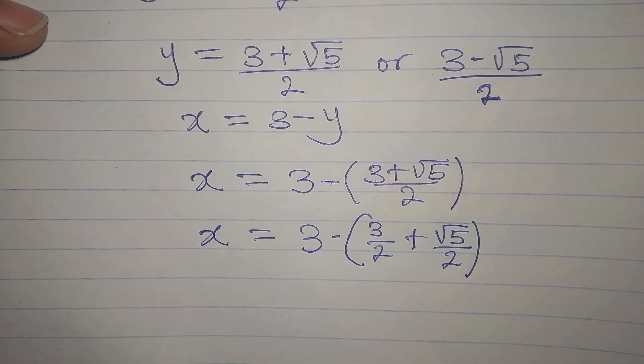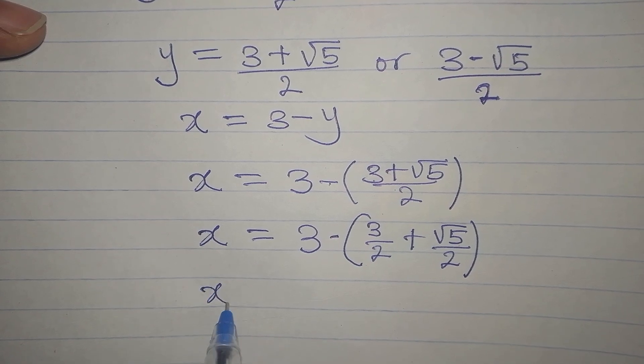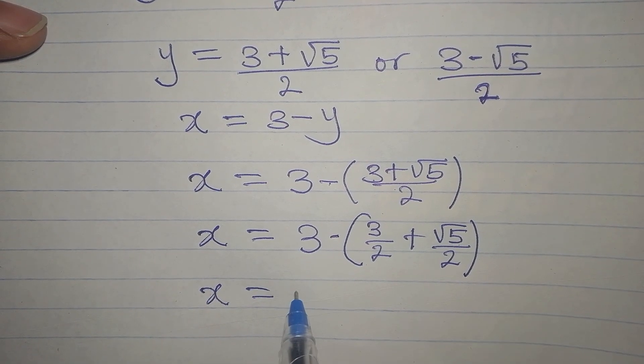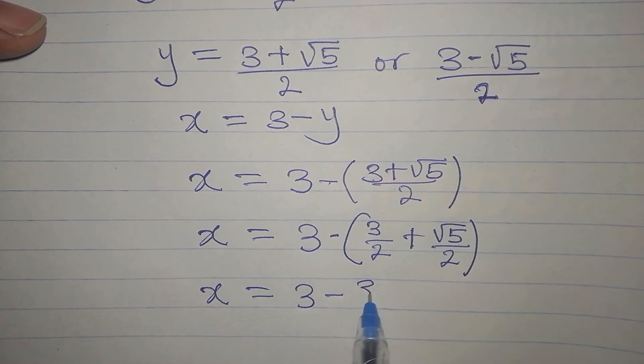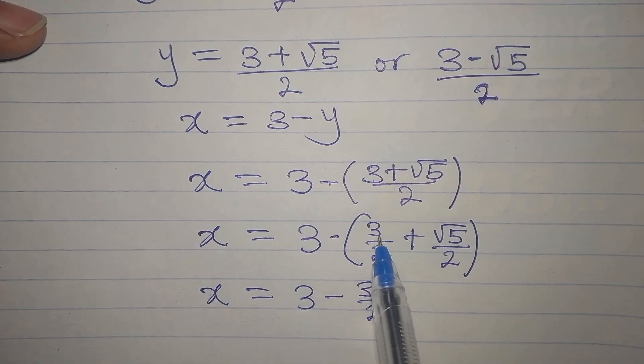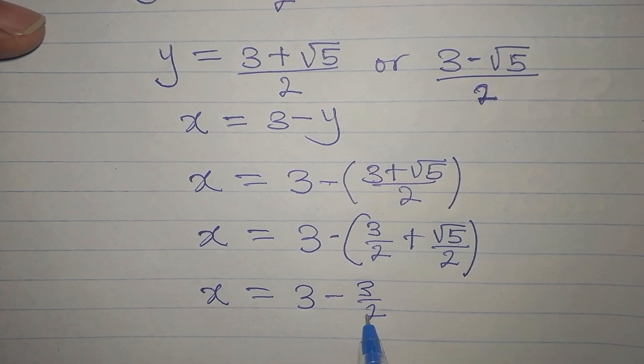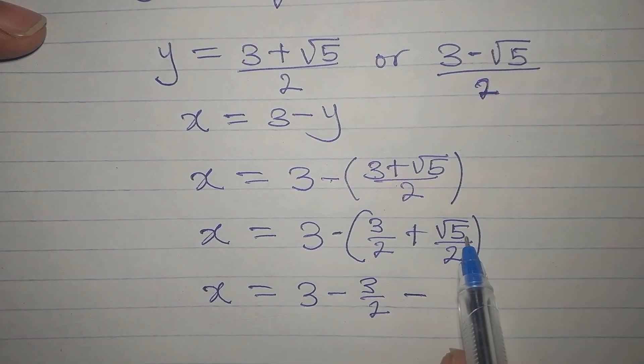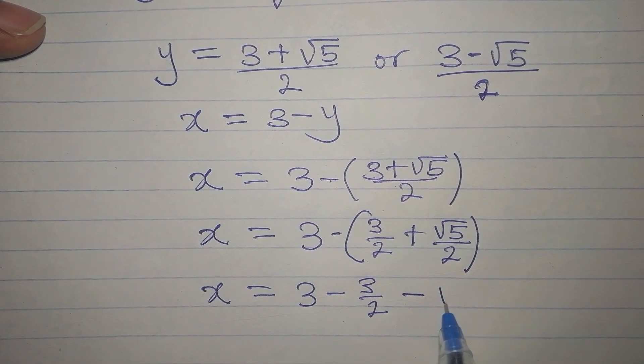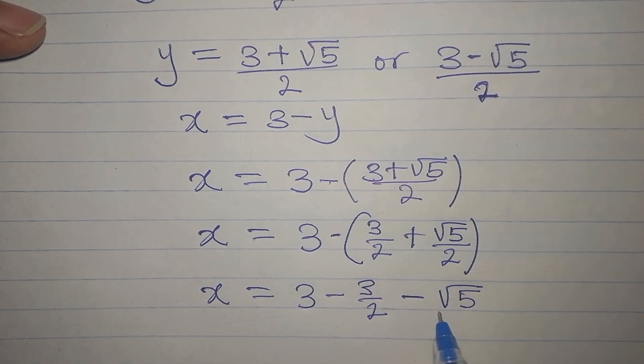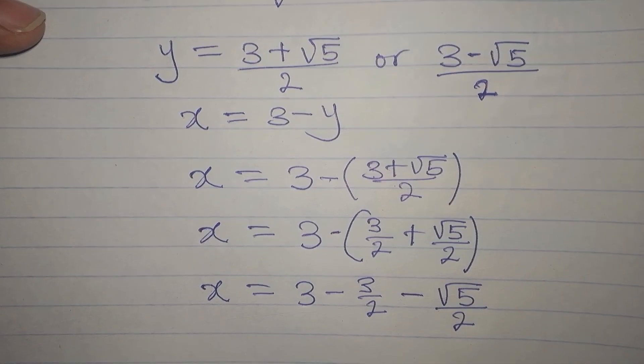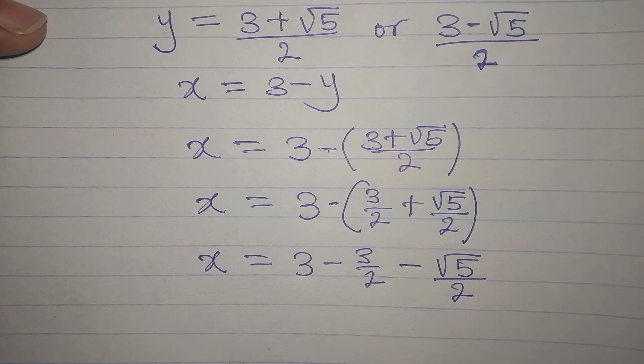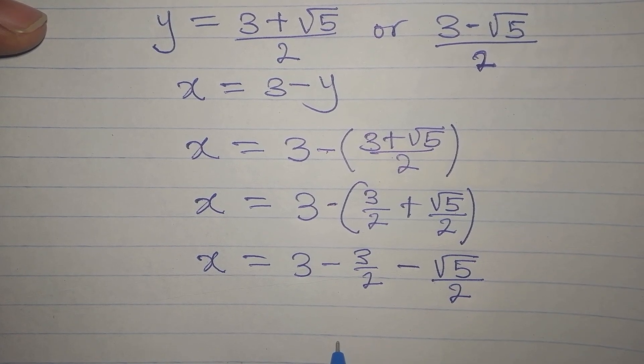Then you'll now have x to be 3 minus 3 over 2. 3 over 2 times negative is negative 3 over 2. Then negative multiplied by the whole of this will now be negative root 5 over 2. So this is what we have. And we can simplify this. The LCM is 2.